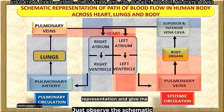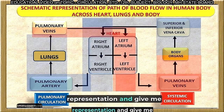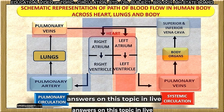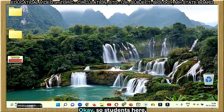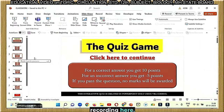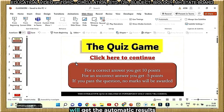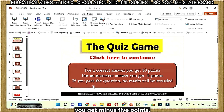Just observe this schematic representation and give answers on this topic in the live classroom evaluation in PPT. Here you can see my screen recording. I have prepared this PowerPoint presentation with a quiz game that gives you automatic results. For a correct answer you get 10 points, for an incorrect answer you get minus five points. If you pass the question, no marks will be awarded.